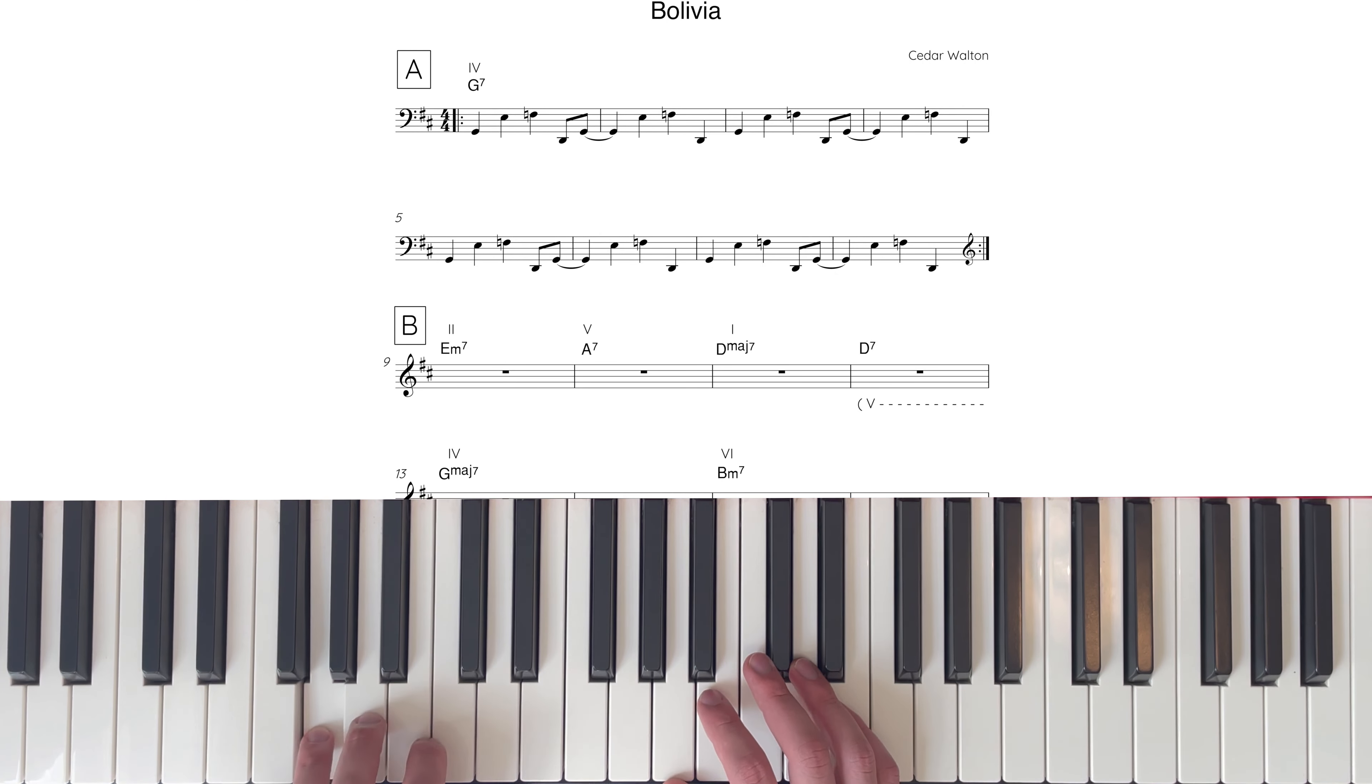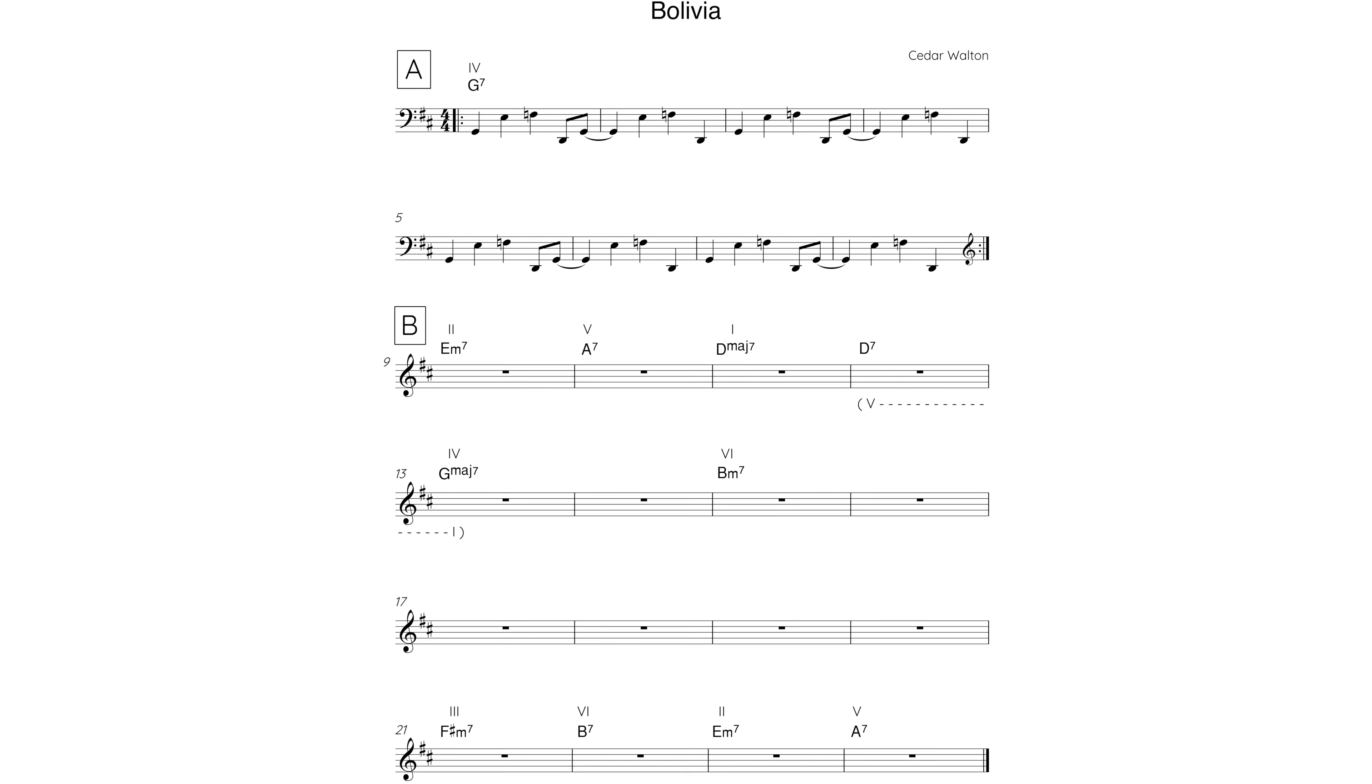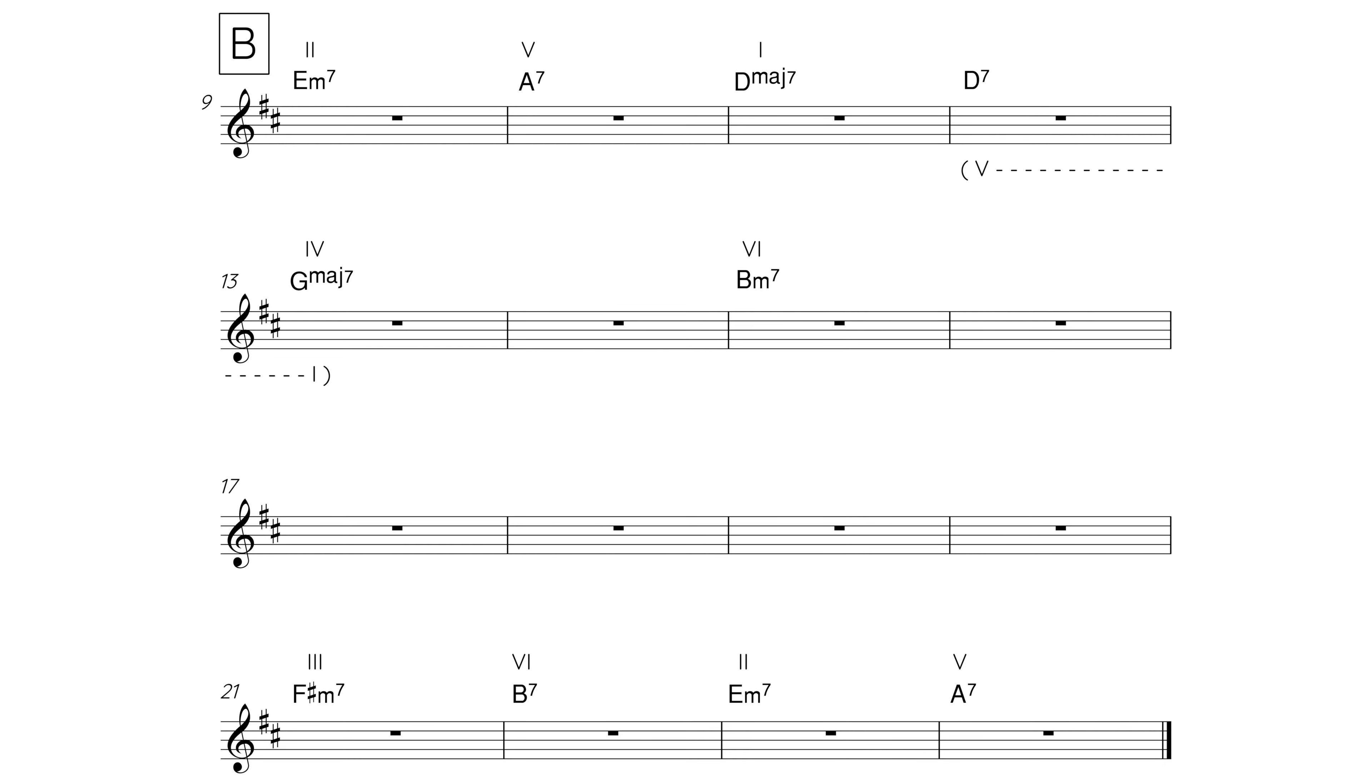Before moving to chord 6, the relative minor of the home key, B minor 7, where we stay for six bars.